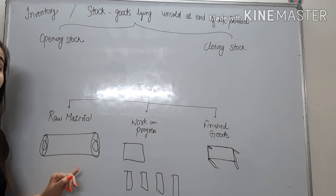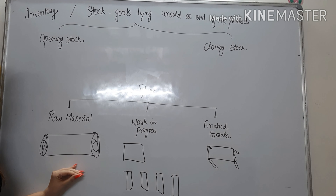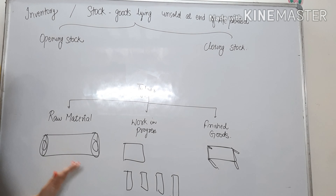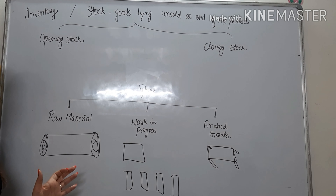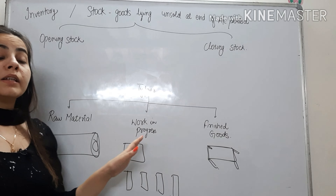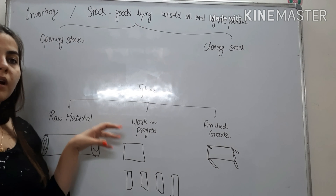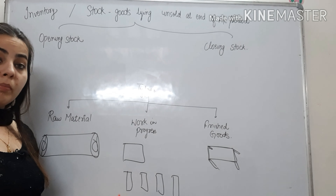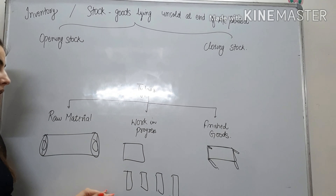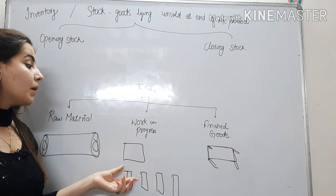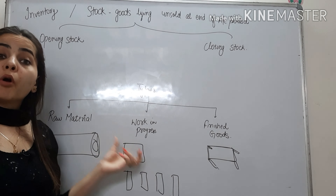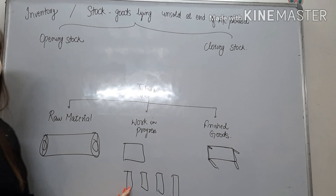So aapke paas raw material hai — abhi aapko zaroorat hai raw material, lekin ispe aapne abhi kaam nahi shuru kiya hai, just aise hi lekar aaye ho, and value is still to be added. Fir aapke paas aayega work in progress — ye woh material hai jispe aap already kaam kar rahe ho, work kar rahe ho, but it is not ready yet. Abhi legs ko fix karoge, glue apply karoge, uske baad finishing karoge, polishing karoge. And last mein ye finished goods ban jaengi — and these are the goods which are ready for sale. Toh these were the three types of stock.